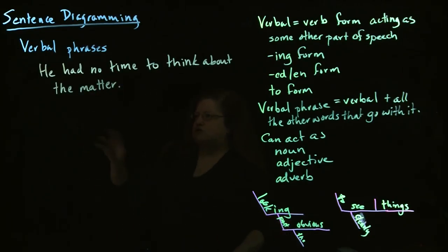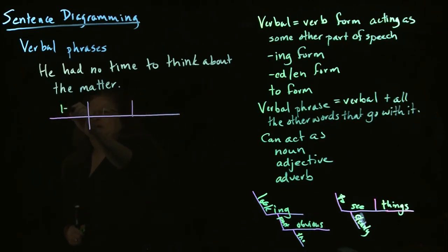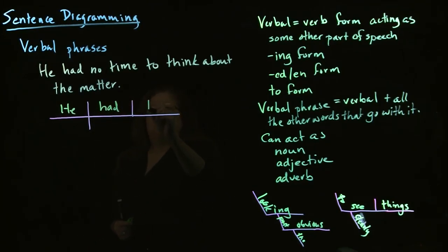So we'll start with our basic framework here, which we have the subject, he. We have the verb, had. We have the object, time. And we have the word, no, which is an adjective modifying time. It's saying how much.